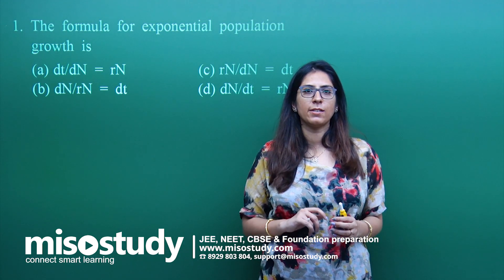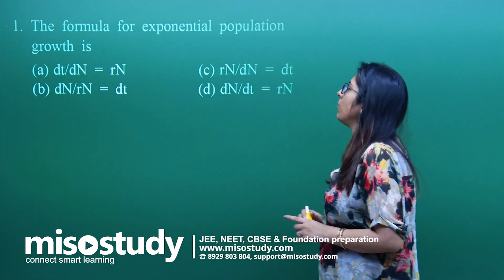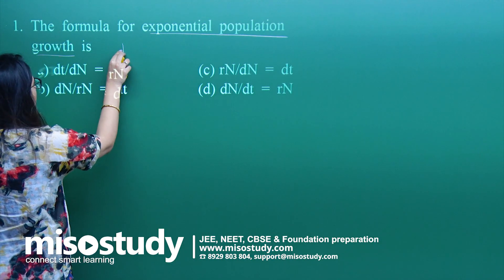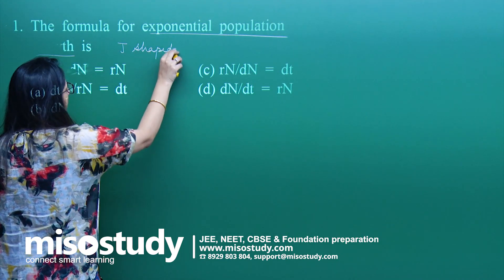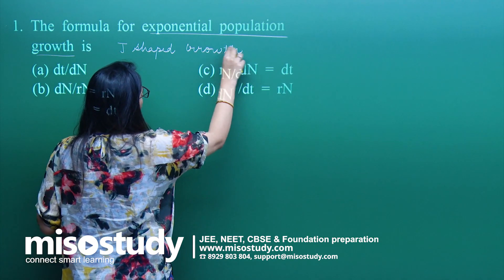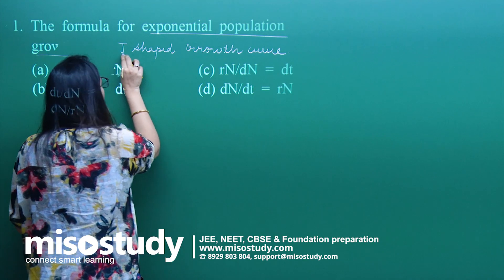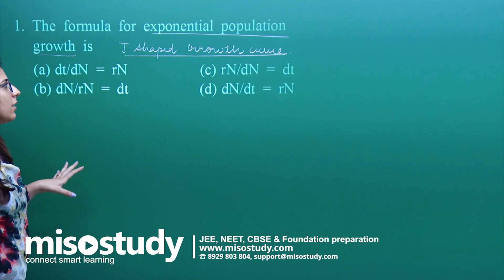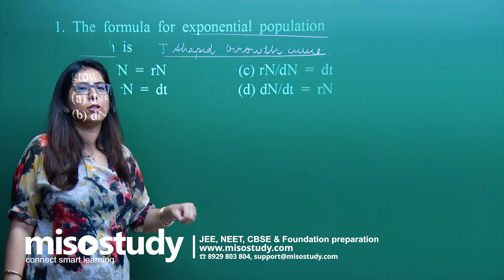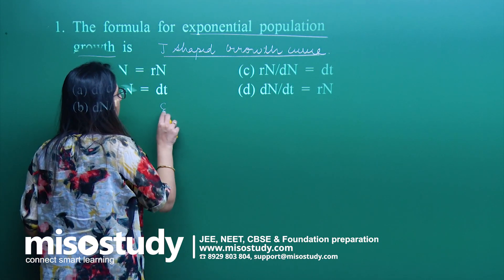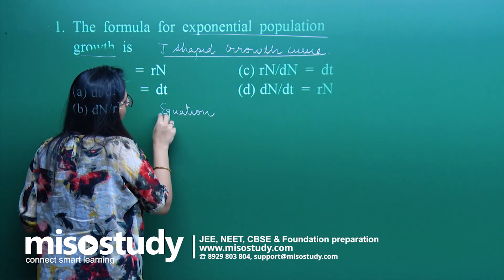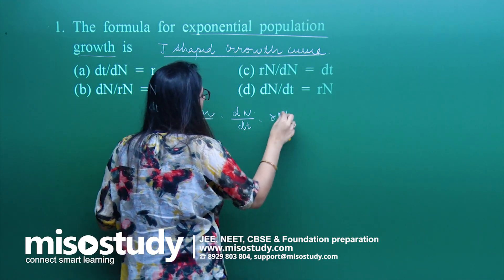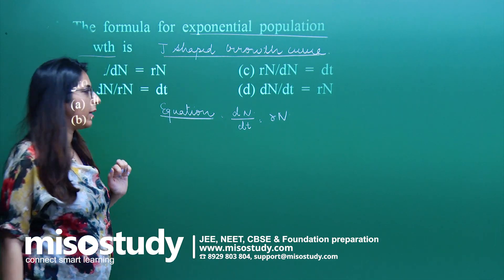Here is the first question: the formula for exponential growth. Exponential growth is also termed as J-shaped growth curve, whereas the other growth curve we have is the S-shaped growth curve, which is a sigmoid growth curve. In the J-shaped growth curve, the population increases suddenly and then drops. The equation for it is: dN/dt = rN.